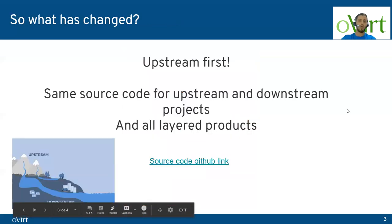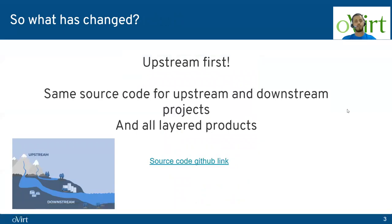So, what has changed? The first thing, and probably the biggest one, is we are finally upstream first. We have the same source code for upstream and downstream. Before OVIRT 4.4, those two projects were completely separate. Downstream and upstream had different source code and therefore were hard to maintain and not open source.